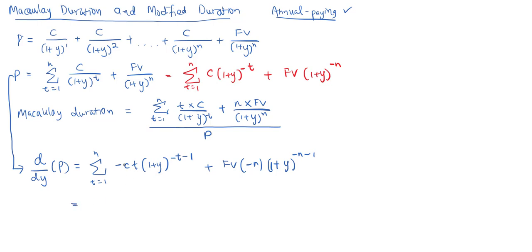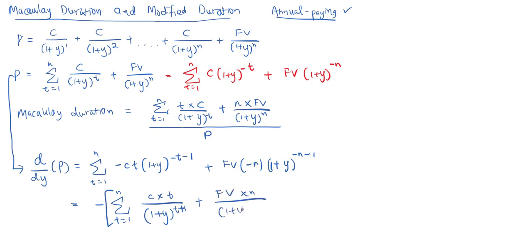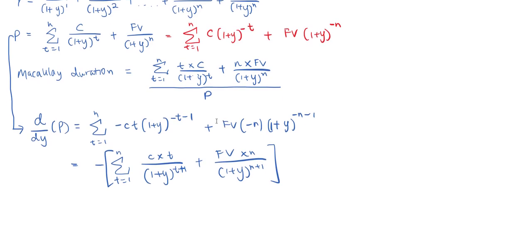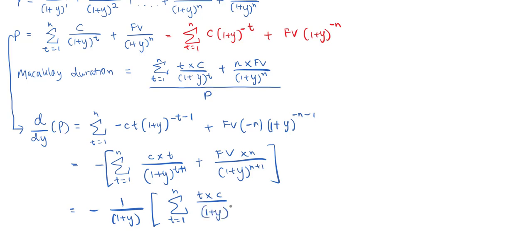We can factor out the negative sign, giving us: negative times the sum of C times T divided by (1+Y) to the power of T plus 1, plus the face value times N divided by (1+Y) to the power of N plus 1. Since each denominator has an extra power of (1+Y), we factorize out 1 over (1+Y), leaving: negative 1 over (1+Y) times the sum of T times C over (1+Y) to the power of T, plus N times face value divided by (1+Y) to the power of N.